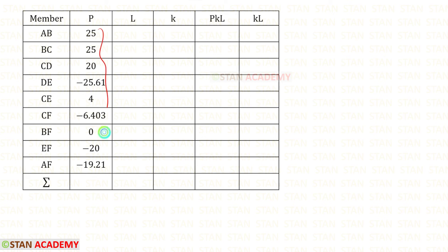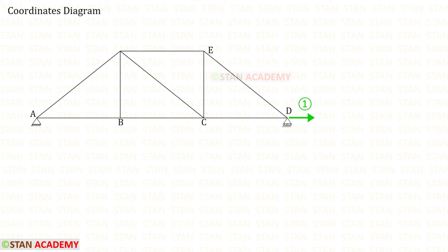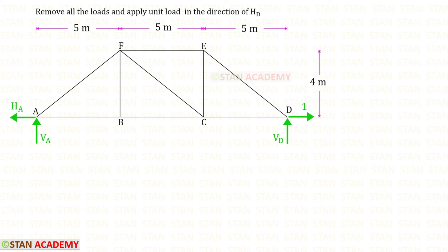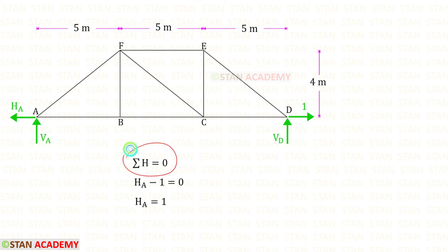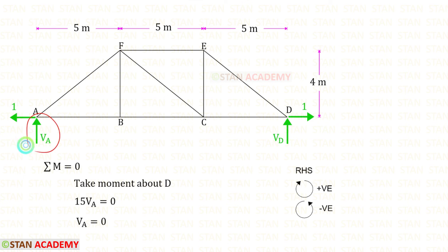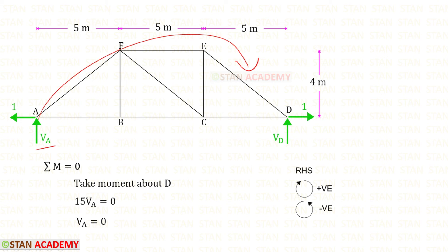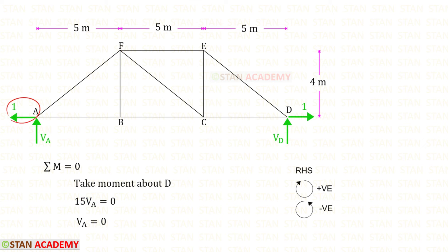Let us enter all of the member forces. Now we have to find the values of k. We have to remove all of the loads from the truss, and in the direction of HD, we have to apply a unit load. Then we need to find all of the member forces. I have applied the unit load in the direction of HD. We need to find these three reactions. By applying Sigma H = 0, for HA we will get 1. To find VA, we can take moment about D. VA is acting in the clockwise direction so it will be positive, and the distance is 15. For the horizontal reaction, there is no perpendicular distance about D, so we should not consider that. In this case, VA will be 0 and VD will also be 0 because there is no vertical load or vertical reaction.